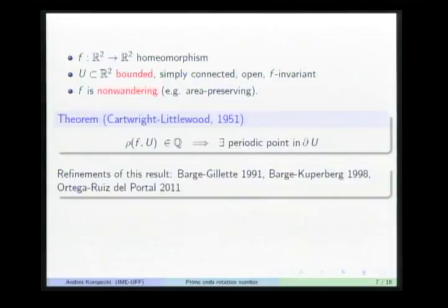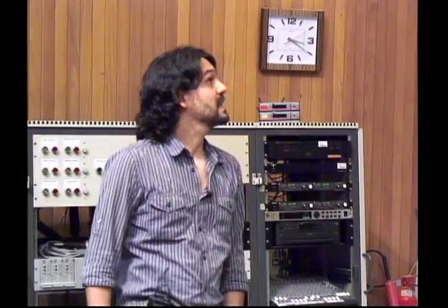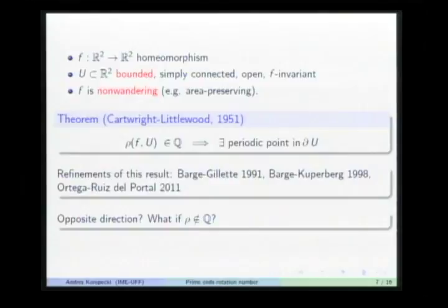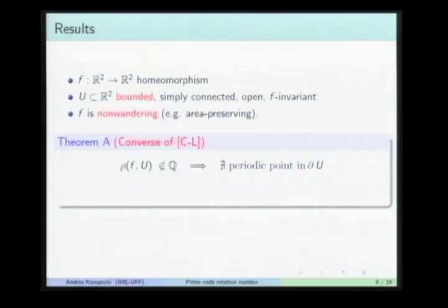Their first result is precisely the converse: under the same non-wandering hypothesis, an irrational prime ends rotation number implies no periodic points in the boundary of the set. Furthermore, when there are no periodic points, the boundary is an annular continuum — that is, an intersection of a nested sequence of annuli.